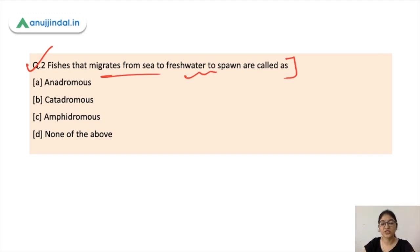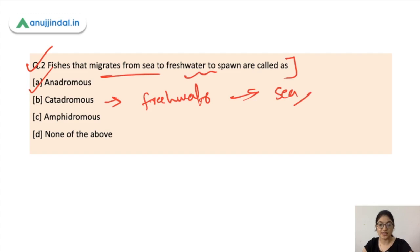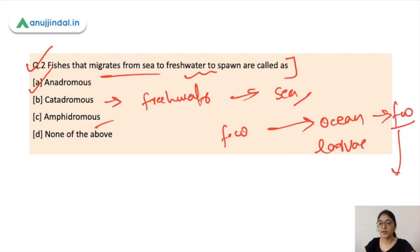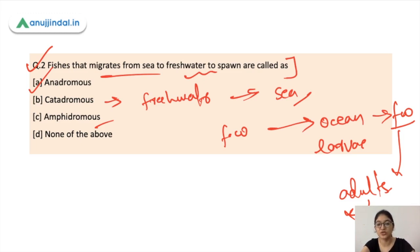Anadromous fishes move from the sea to fresh water to lay their eggs. Catadromous fishes do the opposite — they migrate from fresh water to the sea to lay their eggs. In Amphidromous fishes, spawning occurs in fresh water, then the eggs or larvae drift to the ocean, and the fish later return to fresh water to develop into adults. The correct answer here is Anadromous.